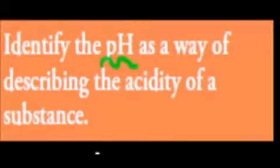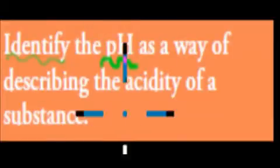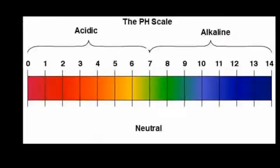First, I'll read the actual dot point. It says, identify the pH as a way of describing the acidity of a substance. So that verb is identify. So identify just means you need to know that pH is a way of describing the acidity of a substance. And I'll explain what acidity itself is.